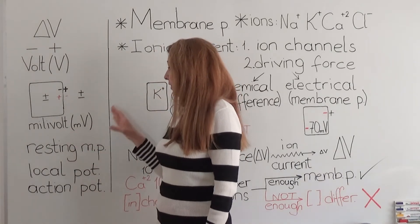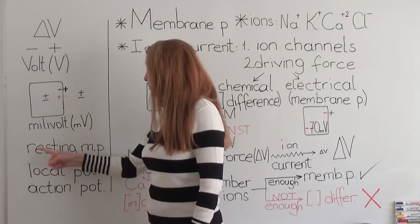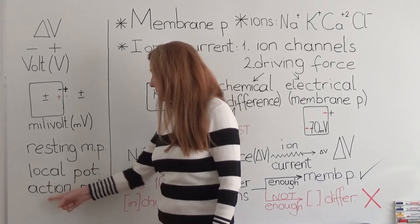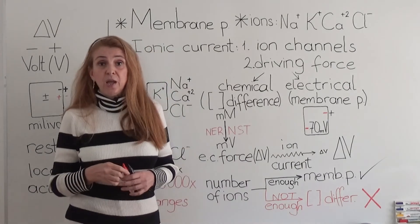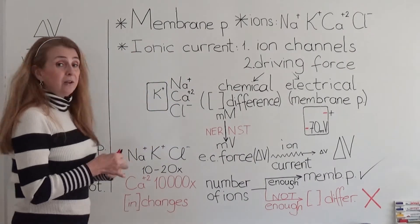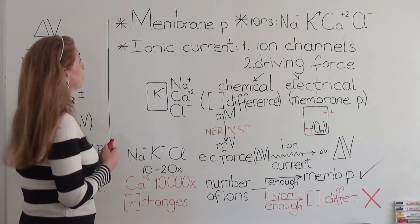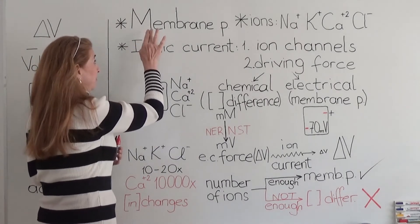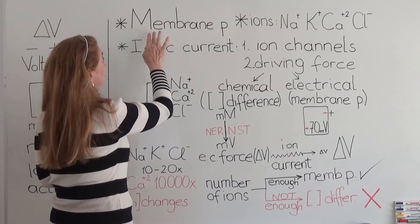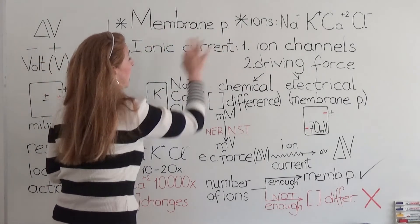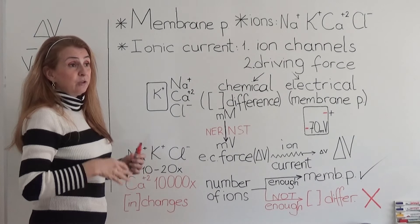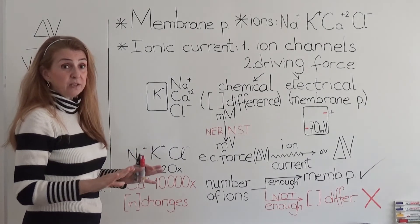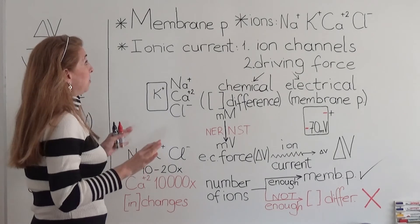What types of potentials do we have? Three types: one, resting membrane potential; two, local potentials; and three, action potentials. Now let's have a look at the highlights about these potentials. First of all, we have to know that these potentials happen at the membrane. The rest of the intracellular and extracellular fluid is not related with these potentials.